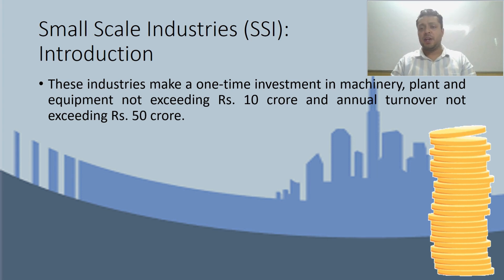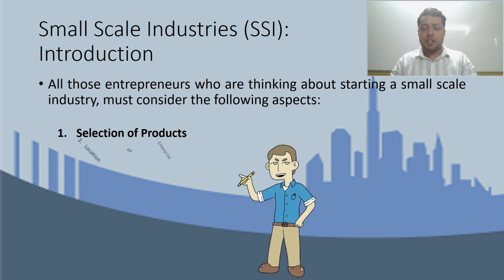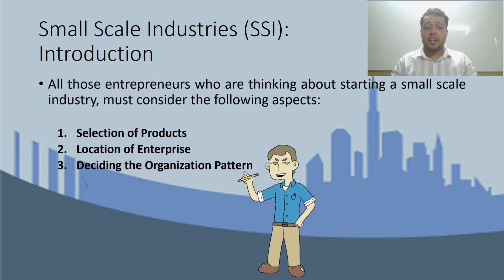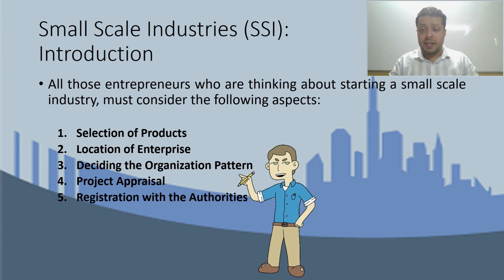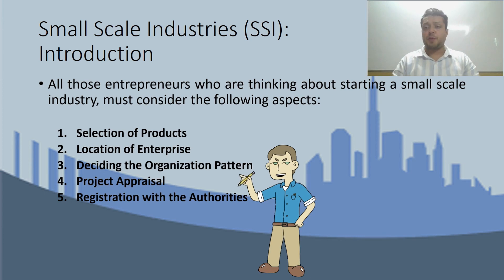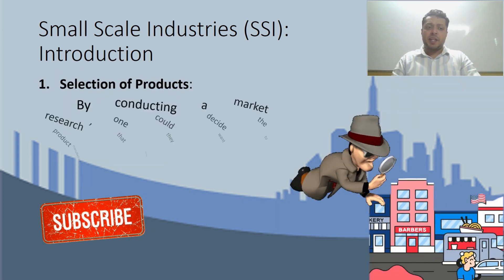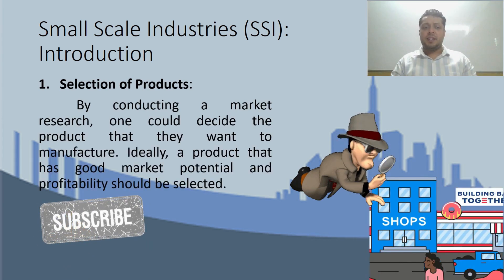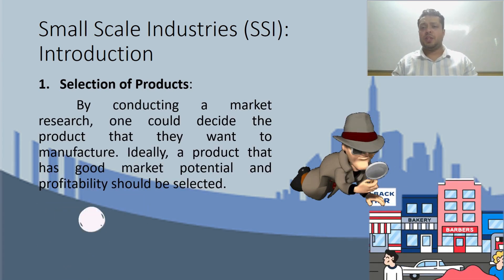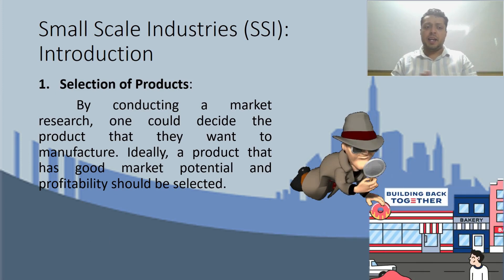The annual turnover of small-scale industries does not exceed 50 crore. Entrepreneurs who are thinking of starting a small-scale industry should consider a few key aspects: first, selection of products; second, location of enterprise; third, deciding the organization pattern; fourth, project appraisal; and last, registration with the authorities. Regarding the first point — selection of product — market research can help decide which product to manufacture through small-scale industries.